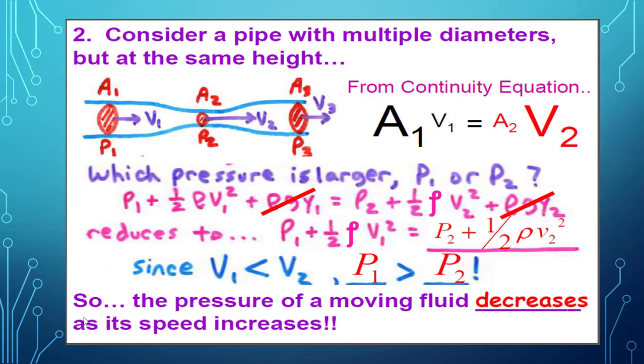Second application: consider a pipe with multiple diameters, change in diameter, but at the same height. So y2 and y1 equal zero here. We can cancel the height term. As we see, P1 plus half rho v1 squared equals P2 plus half rho v2 squared. Because pressure and velocity squared, the sum of them equals constant. Any increase on one side in pressure, for example, decreases the velocity, and the opposite. So if the pressure decreases, the speed increases, and the opposite.